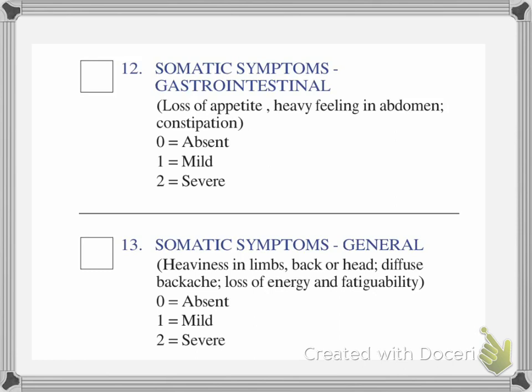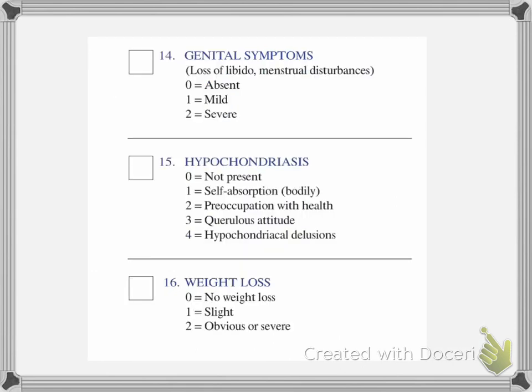Question twelve covers other somatic symptoms — gastrointestinal ones such as heavy feeling in the abdomen, loss of appetite, or constipation. Mark that between absent, mild, and severe. Question thirteen is more general somatic symptoms: loss of energy, fatigue, heaviness. Mark between absent, mild, and severe. Question fourteen covers genital symptoms such as loss of libido or menstrual disturbances — marked absent, mild, or severe.